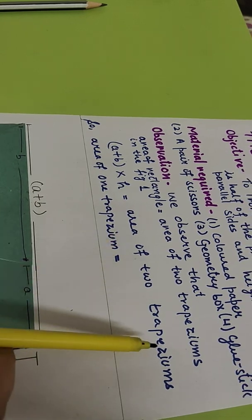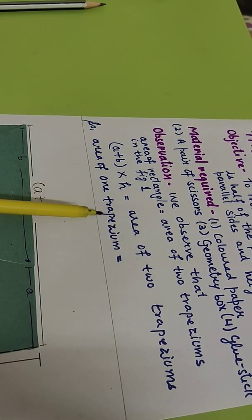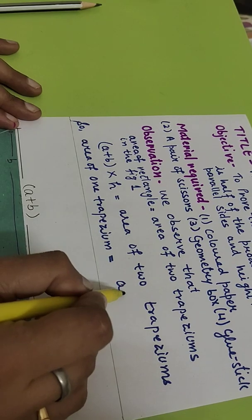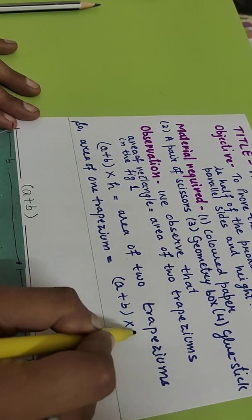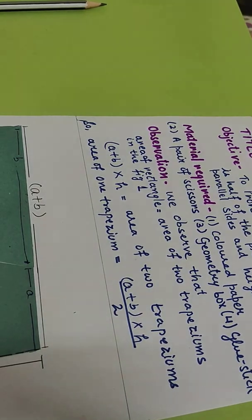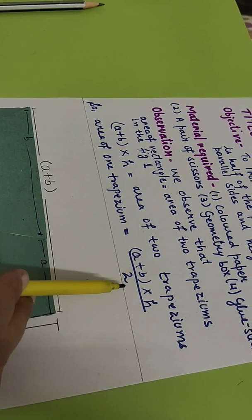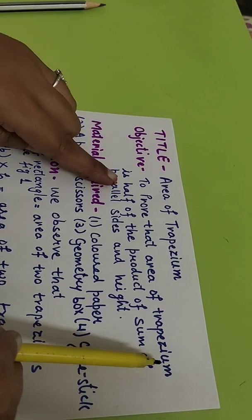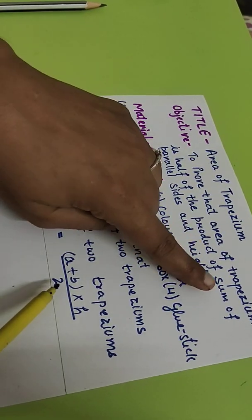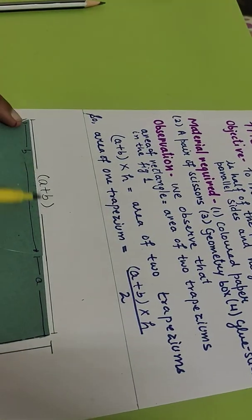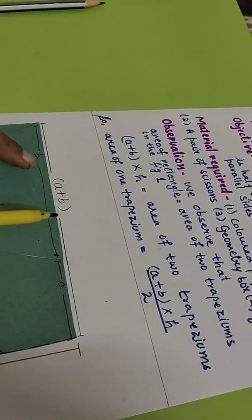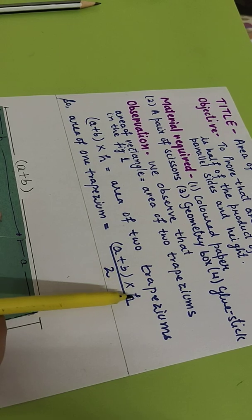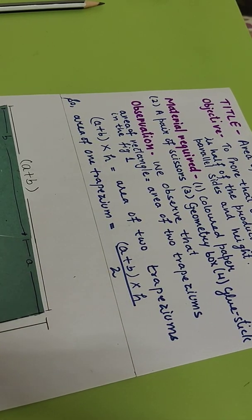If the area of two trapeziums equals (a + b) × h, and we need to find the area of one trapezium, we simply divide by two. So the area of one trapezium = (a + b) × h ÷ 2. This is the required result: the area of a trapezium is half the product of the sum of the parallel sides (a + b) and the height h.